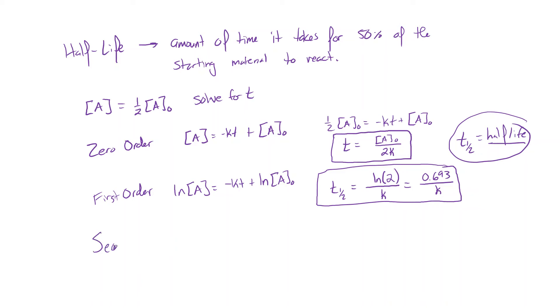For a second order, it gets more complicated. Second order, we have one over [A] equals kt plus one over [A]₀. Plug in one-half [A]₀ for [A], solve for t, and we get the half-life for a second order reaction equals one over k times the initial concentration. So in a second order reaction, the half-life varies depending on how much material you add at the beginning, because the second order reaction is more dependent on how much material is around.